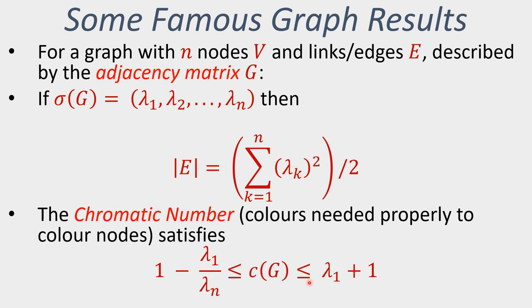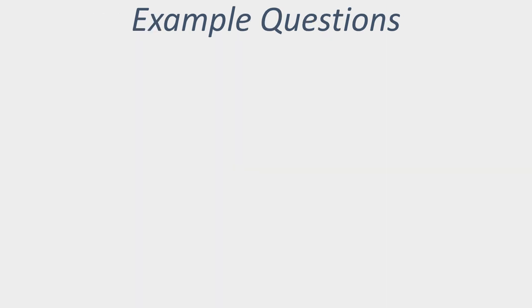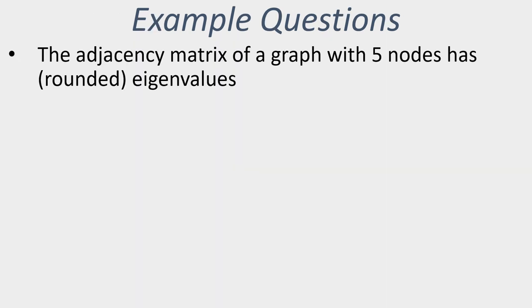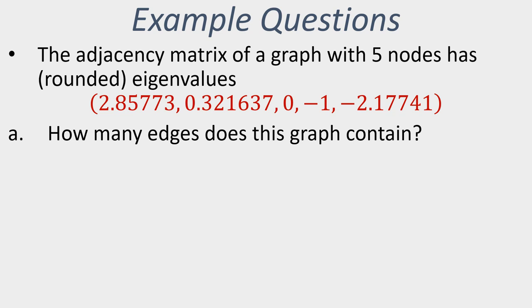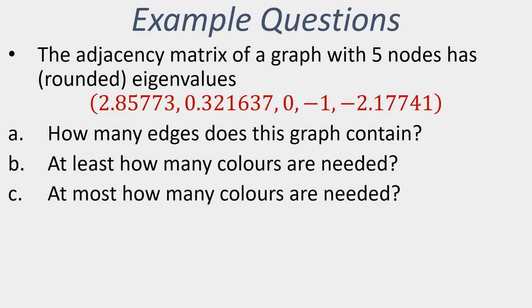That value, the chromatic number, is at least the result on the left-hand side here, and it is at most the largest eigenvalue plus one. Typical sorts of questions you might see: suppose you have an adjacency matrix with five nodes and this has a spectrum of rounded eigenvalues given by that description on the slide. You might be asked: how many edges does that graph contain? How many colours minimally are needed properly to colour the nodes of that graph? How many colours at most are needed to properly colour the nodes of that graph?